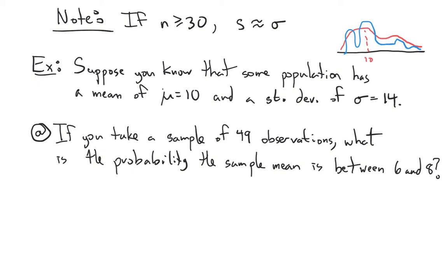All we know is that it has a mean of 10 and a standard deviation of 14. Now, we're asked: if we take a sample of 49 observations, what's the probability that the sample mean — the mean of those 49 observations — is between 6 and 8? We notice the sample size. As soon as we see that number 49, that's bigger than 30 — we like that.